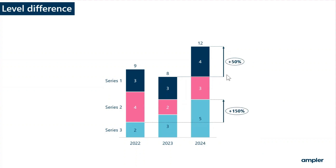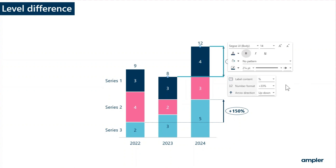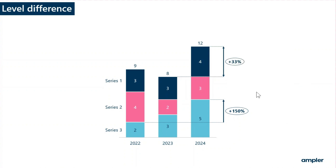Double click on the level difference to update the arrow directions and the calculation. To reposition the level difference, select it and drag to one of the different anchor locations.